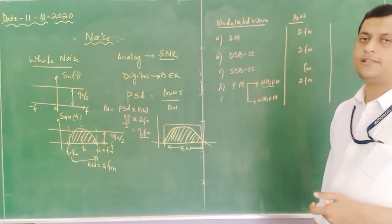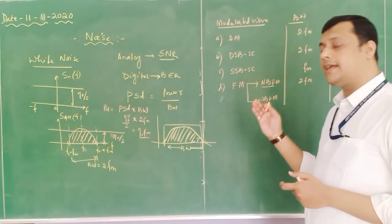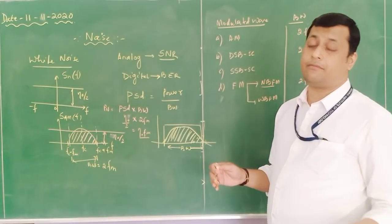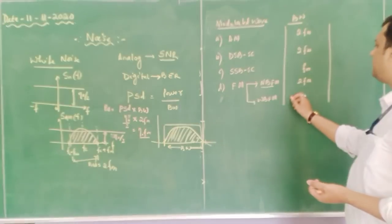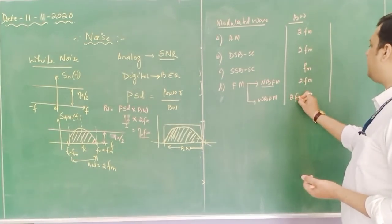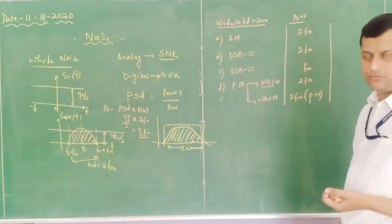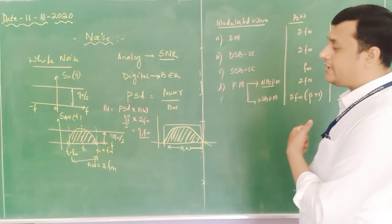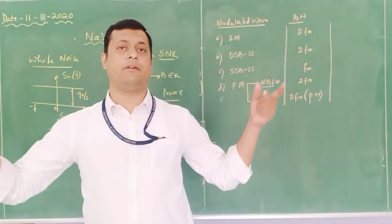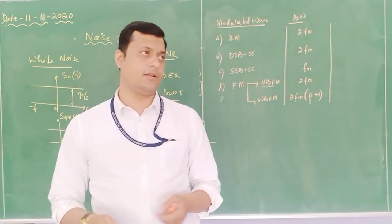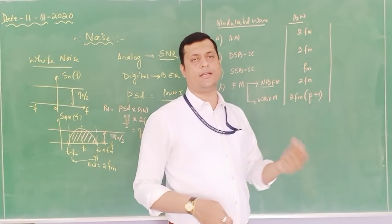For NBFM we need to see how bandwidth is calculated. In NBFM, the upper sideband has positive amplitude while the lower sideband has negative amplitude. For WBFM, the bandwidth is 2fm(β+1) according to Carson's rule, because in WBFM first, second, third order spectrums are present and bandwidth increases up to the Nth order. Here β is the modulation index of FM.